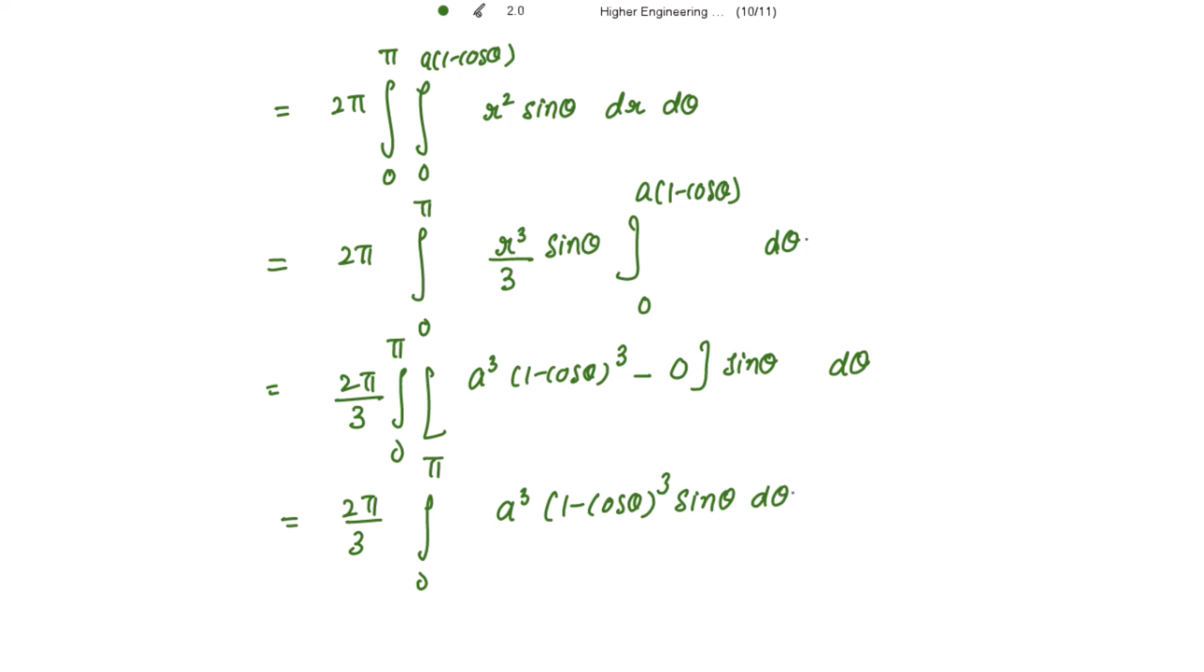It is very easy to integrate now. I know that the differentiation of 1 minus cos of theta is sin theta d theta.